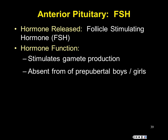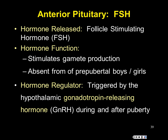FSH promotes gamete production in both females — recruiting ovarian follicles — and males, where it facilitates sperm production. The gonadotropins are not present before puberty; it's the surge of these hormones that initiates puberty and they continue throughout reproductive life. FSH primarily deals with the maturation of oocytes and sperm cells.